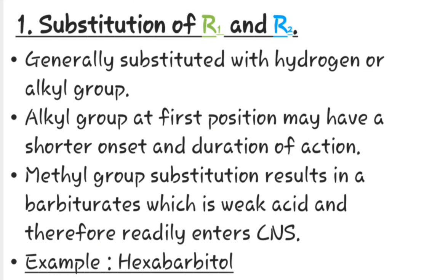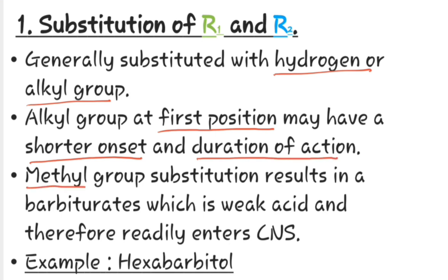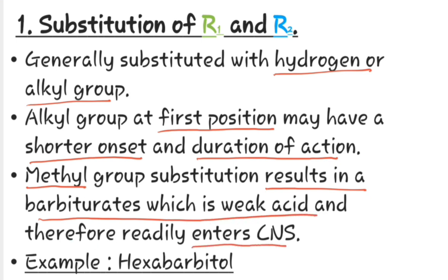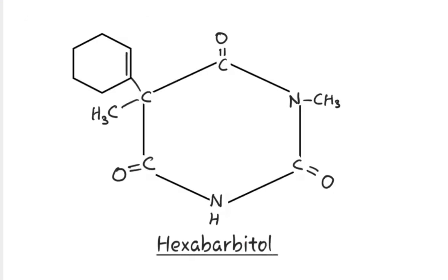Now let us see substitution at R1 and R2. Generally it is substituted with hydrogen or alkyl group. An alkyl group at the 1st position may have shorter onset and duration of action. A methyl group at the 1st position may result in a barbiturate which is a weak acid and therefore readily enters the CNS. The best example for it is hexabarbital, which contains a methyl group at the 1st position.